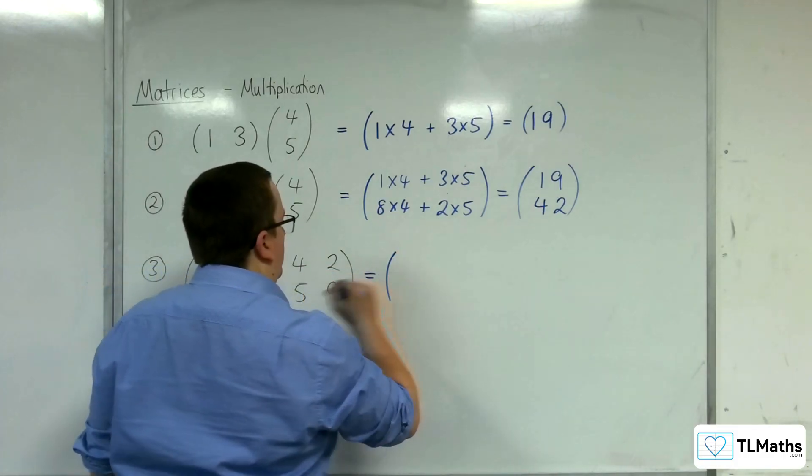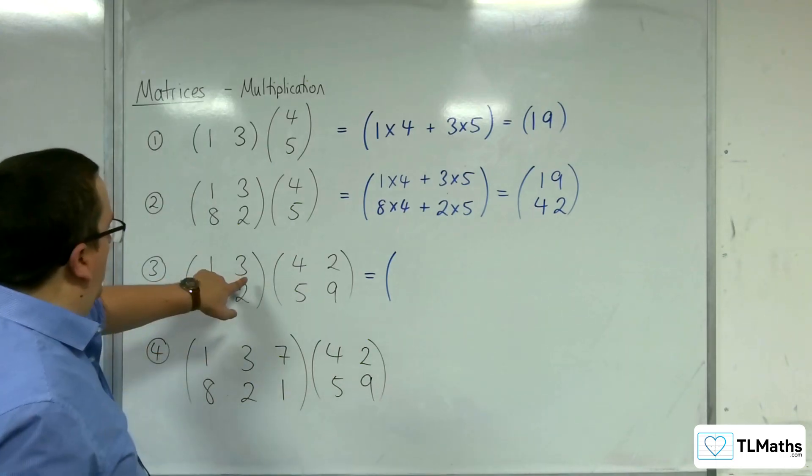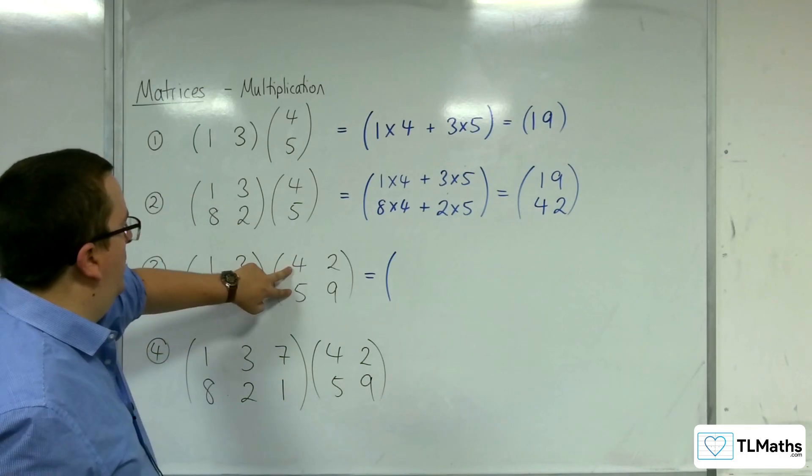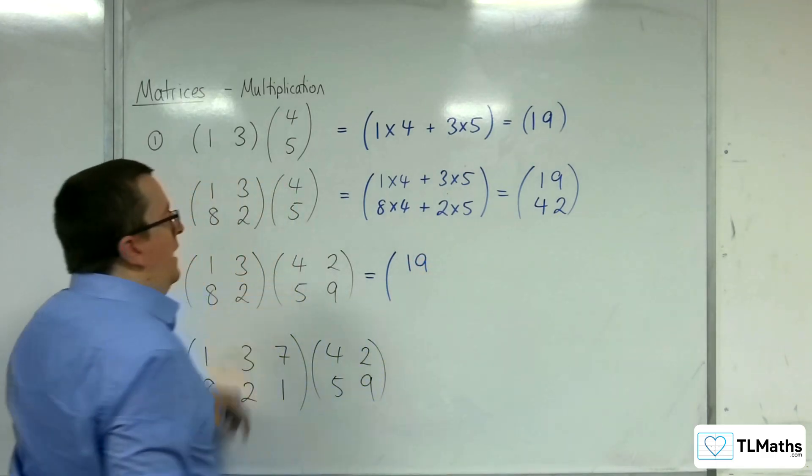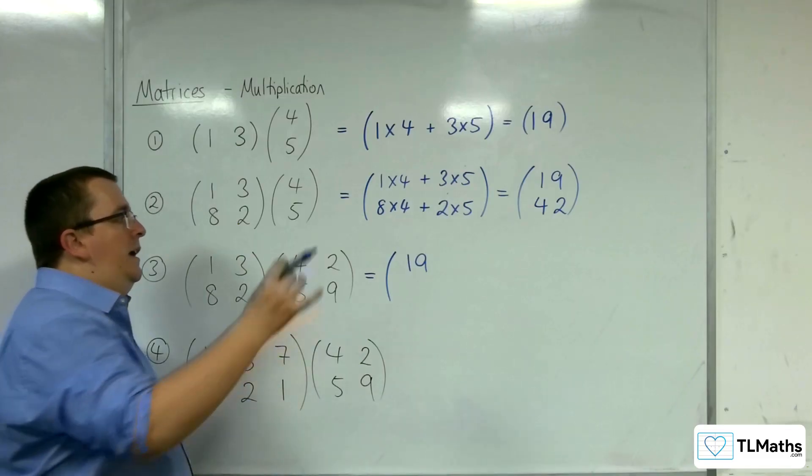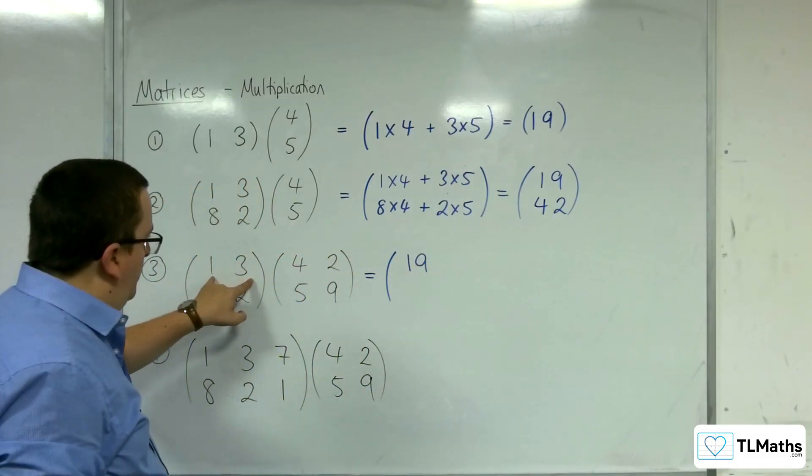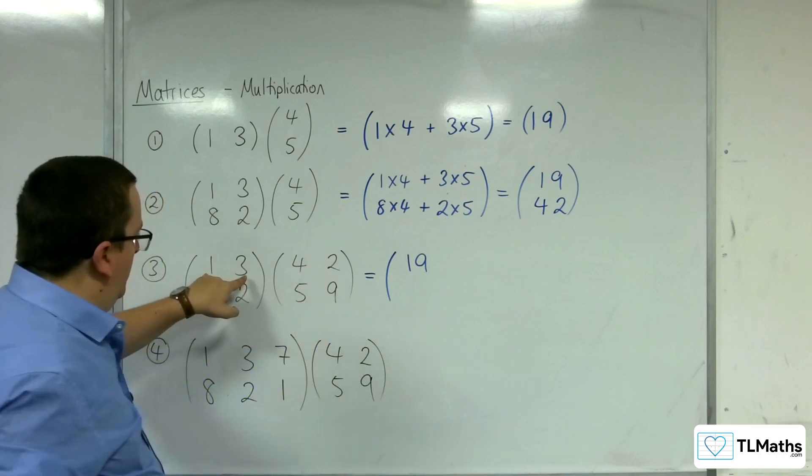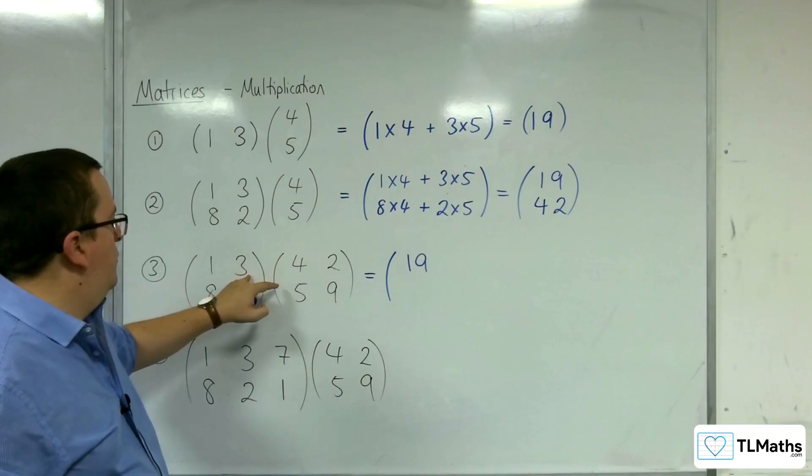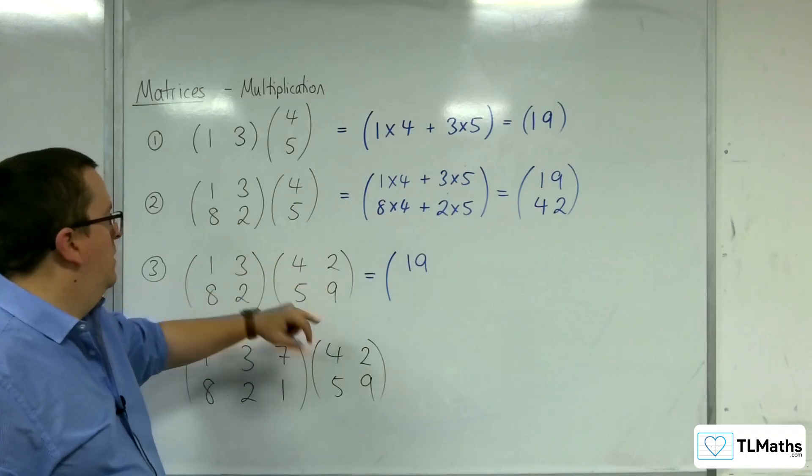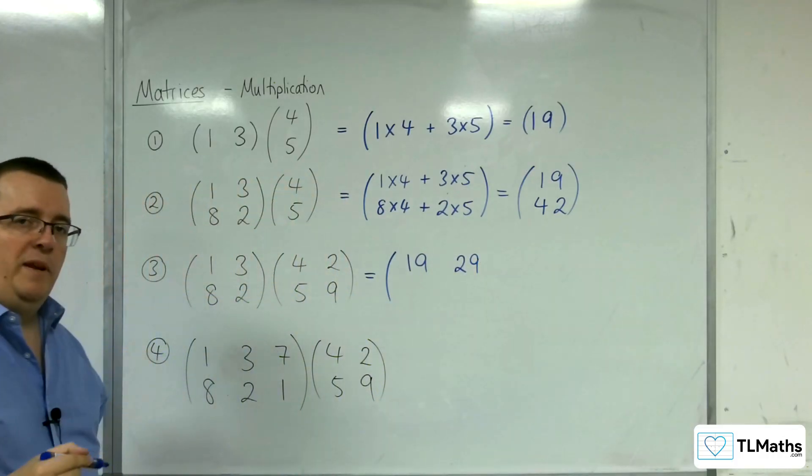So, how's it going to work with this one? We're going to do 1, 3 times the 4, 5, which we now know is 19. And that gives you the first element in your matrix. Then, we do the 1, 3, because we've got another column here. So, we're going to do the 1, 3 times the 2, 9. You get 1 lot of 2 and 3 lots of 9. So, 2 plus 27, so 29. That gives you the next element in your matrix.